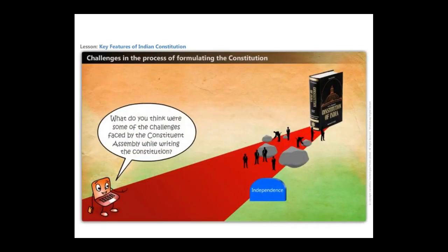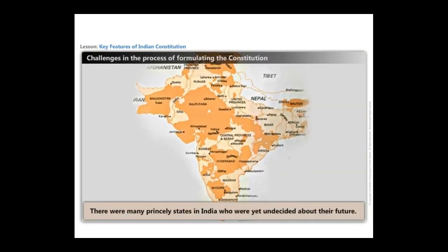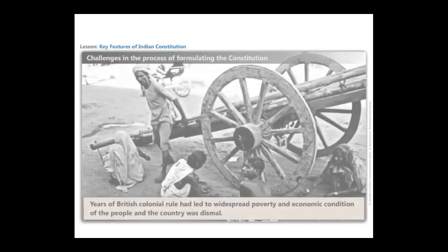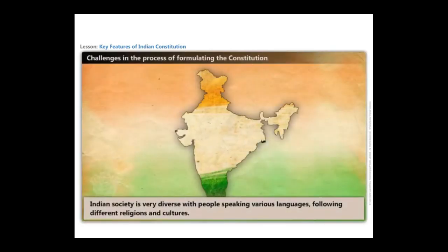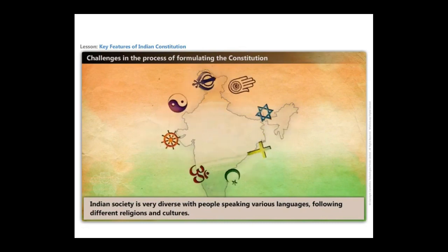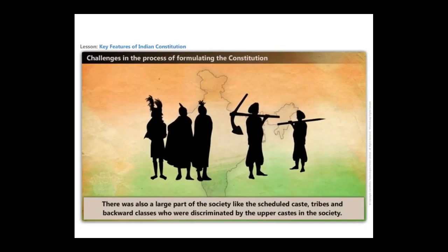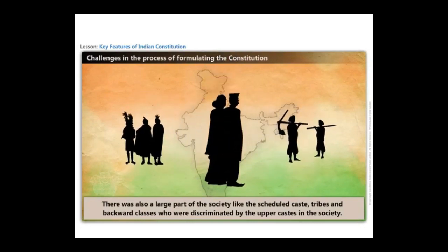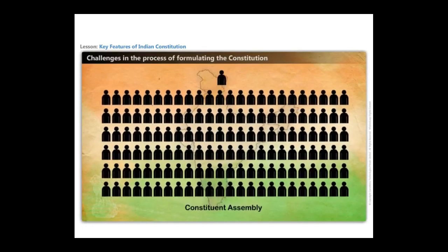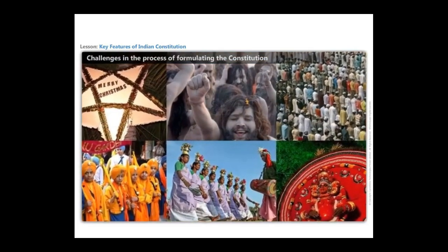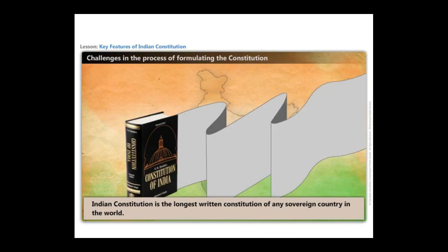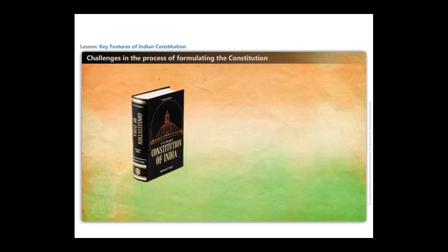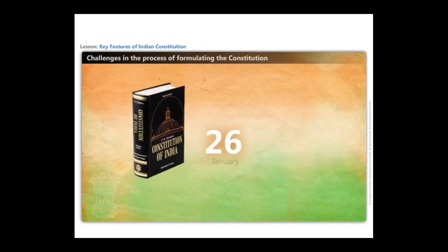There were many challenges faced by the constituent assembly while writing the constitution. There were many princely states in India yet undecided about their future. Years of British colonial rule had led to widespread poverty, and the economic condition of the country was dismal. Indian society is very diverse, with people speaking various languages and following different religions and cultures. There was also a large part of society — the scheduled tribes, castes, and backward classes — who were discriminated against by the upper castes. Despite these challenges, the constituent assembly gave India a visionary document that reflects respect for maintaining diversity while preserving national unity. The Indian constitution, passed on 26 November 1949, came into effect on 26 January 1950. It is the longest written constitution of any sovereign country in the world.